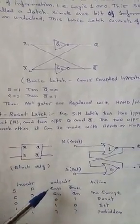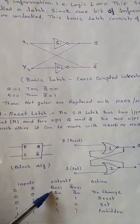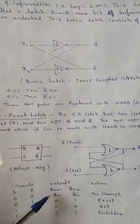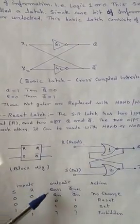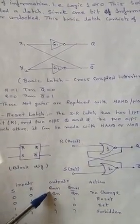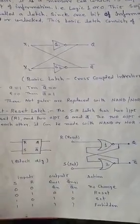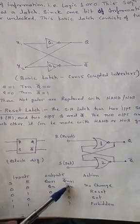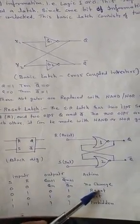Then the output Q is QN. QN means previous output, past output. It means no change. And Q bar is QN bar. Action is no change.